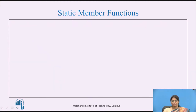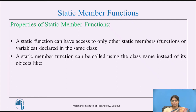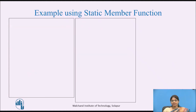Let us see what static member functions are. The properties of static member functions are: a static function can only access other static members — be they functions or variables — declared in the same class. A static member function can be called using the class name instead of an object, like this: class name, scope resolution operator, and the static member function name. Let us take an example using a static member function.